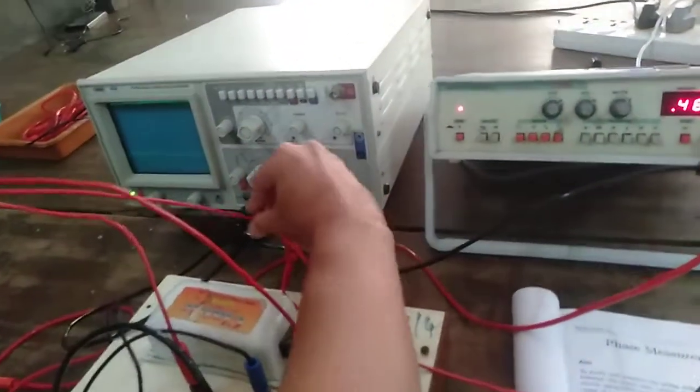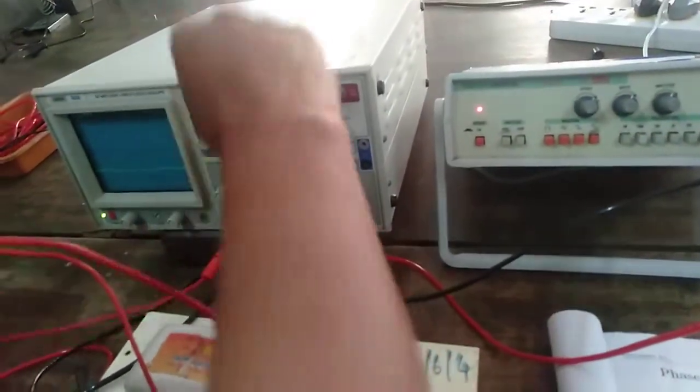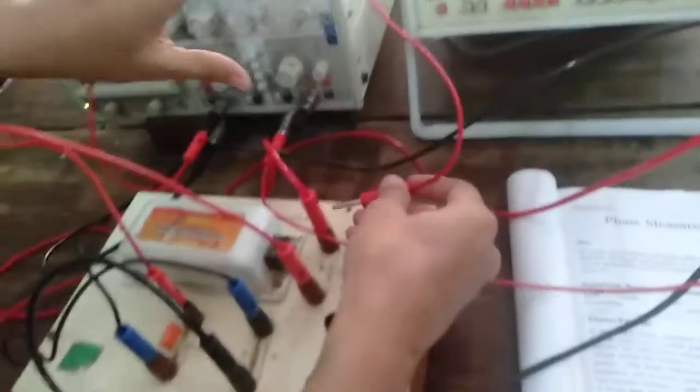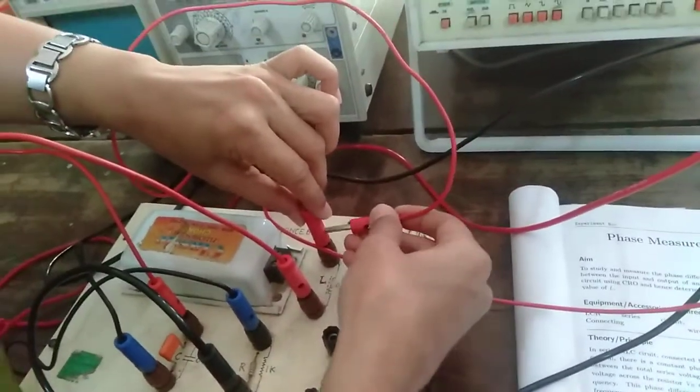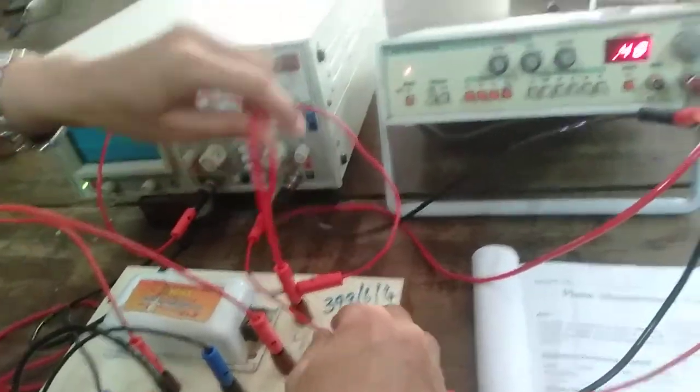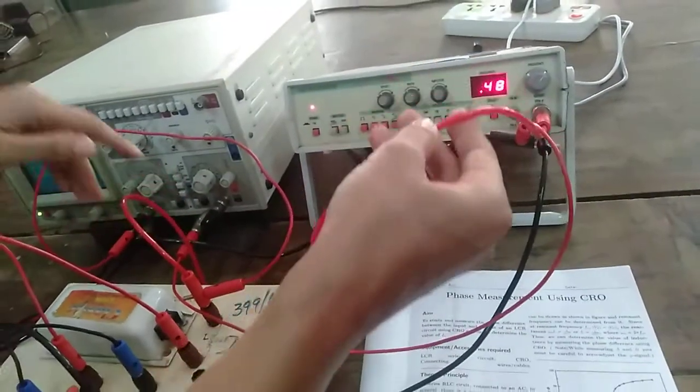The higher potential end of channel 1 that is Y has to be connected across L, where this L has gone to the higher potential end of the audio oscillator.